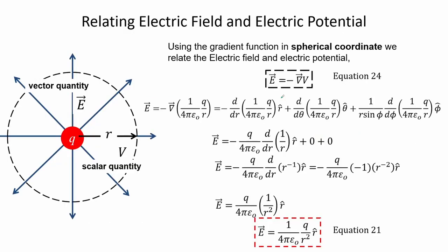Using the gradient function in spherical coordinates for a point charge system, we relate the electric field and electric potential using equation 24, where the electric field equals the negative of the gradient of electric potential. Substituting the value of the electric potential and taking its derivative, we arrive at the expression for the electric field that is exactly the same as the established formulation in equation 21. Note that when deriving using spherical coordinates, only the r parameter is non-zero while the theta and phi terms result in zero, since the electric potential is only a function of r.